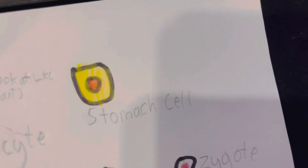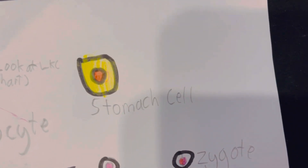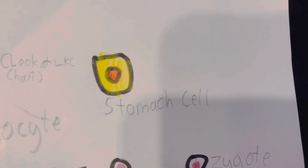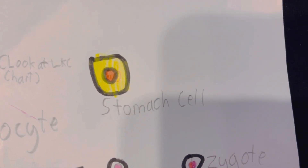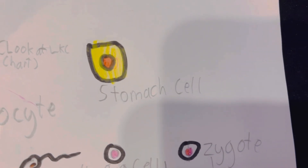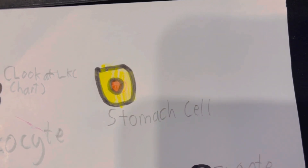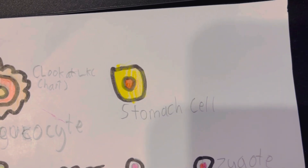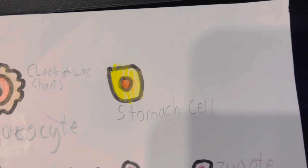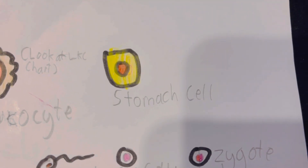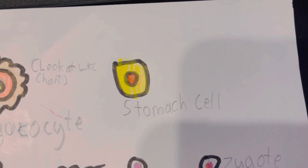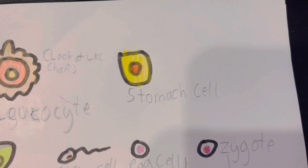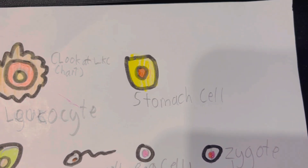Next, stomach cells. These make up your stomach. They produce acid, and there is mucus around them to protect them from the acid. These also line the stomach wall.